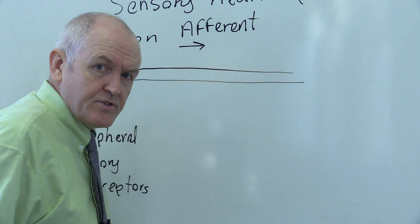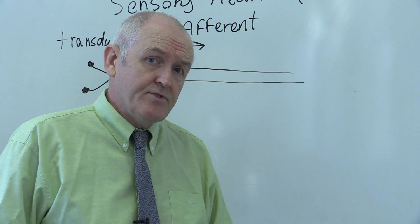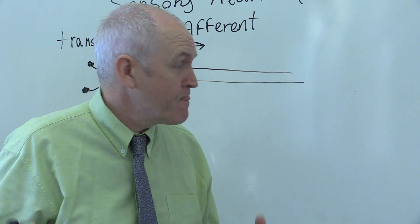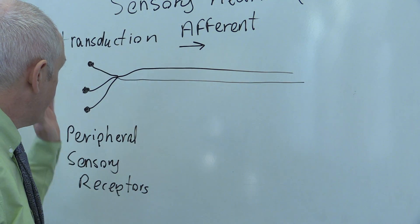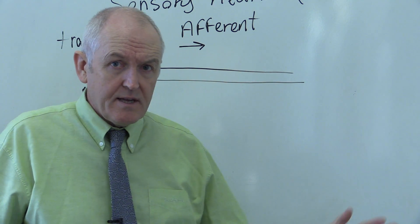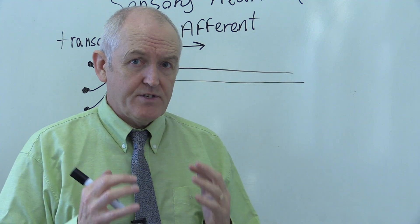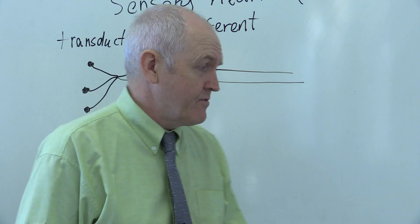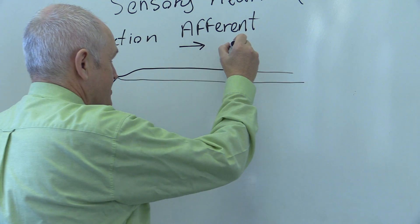The motor neurons were efferent, carrying information from the central nervous system out towards the periphery. The sensory system is afferent — the information is going in towards the central nervous system from the periphery, so it's traveling in that direction.